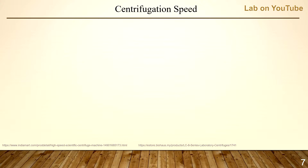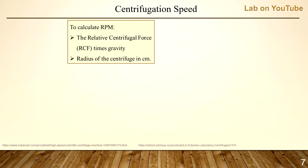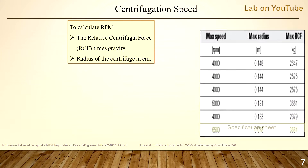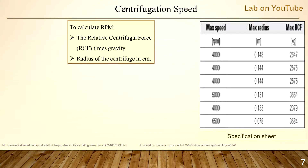Centrifuge speed is calculated based on two factors: number one, the relative centrifugal force (RCF) times gravity; and number two, the radius of the centrifuge in centimeters. To obtain the RCF, refer to your standard operating procedure or contact your lab. To get the radius, consult your centrifuge instruction manual under specifications, or measure it yourself.